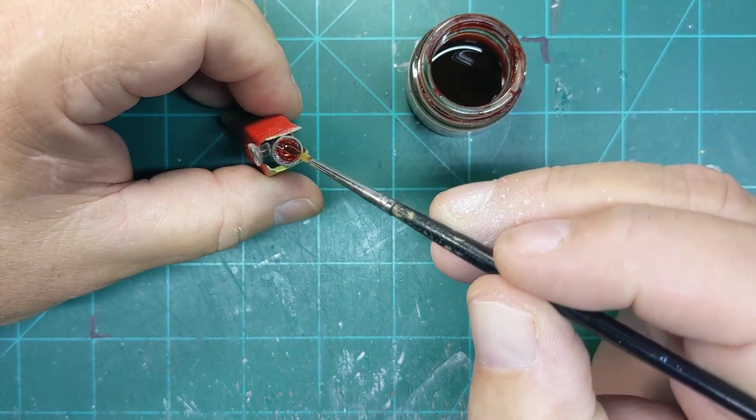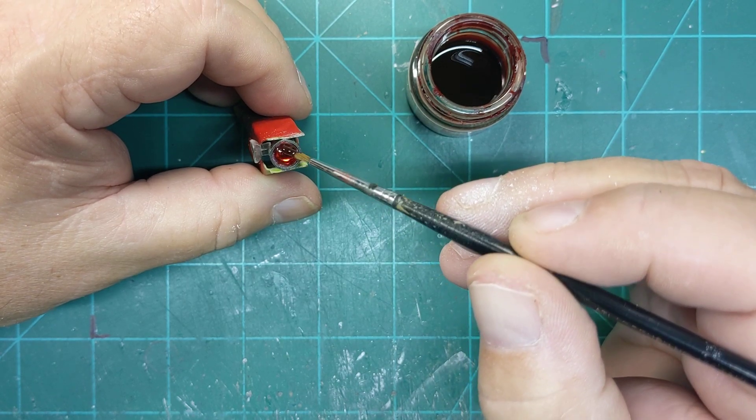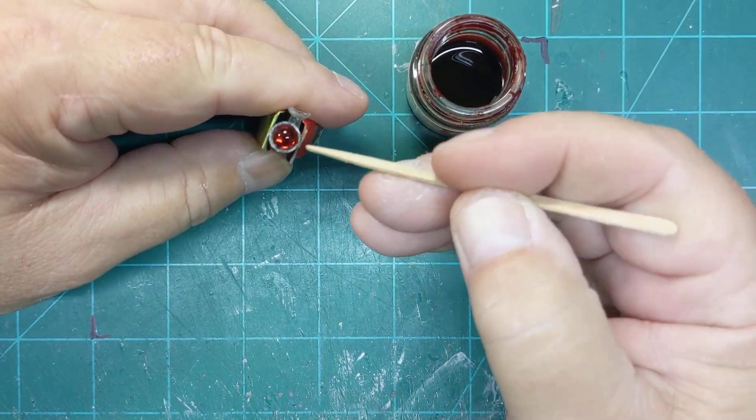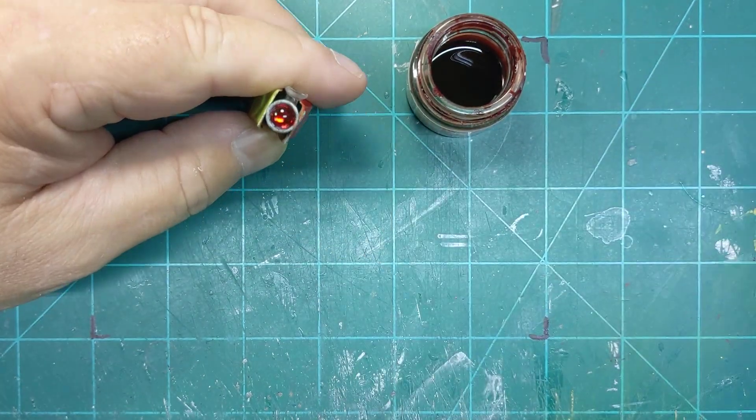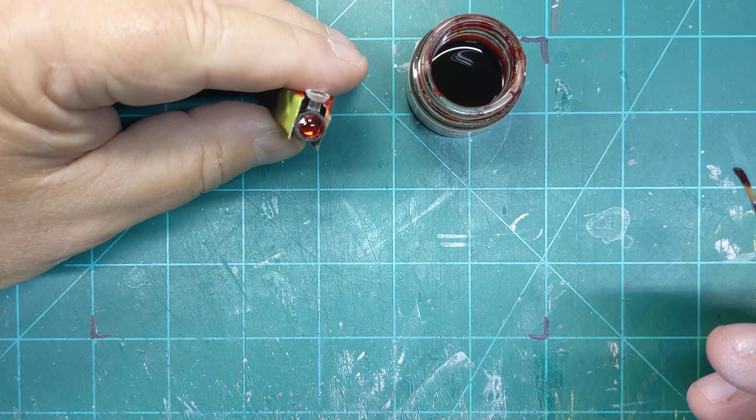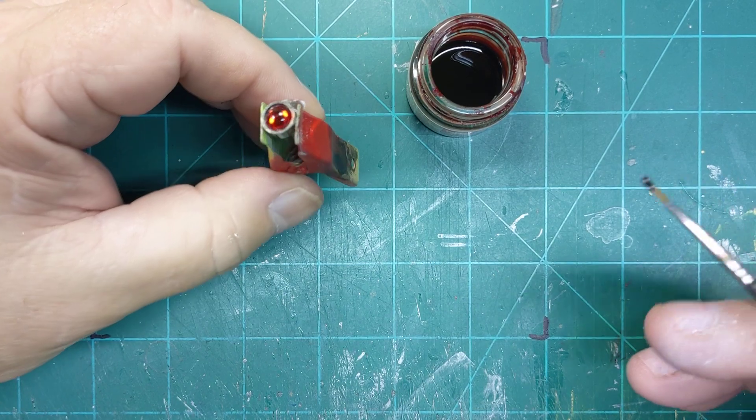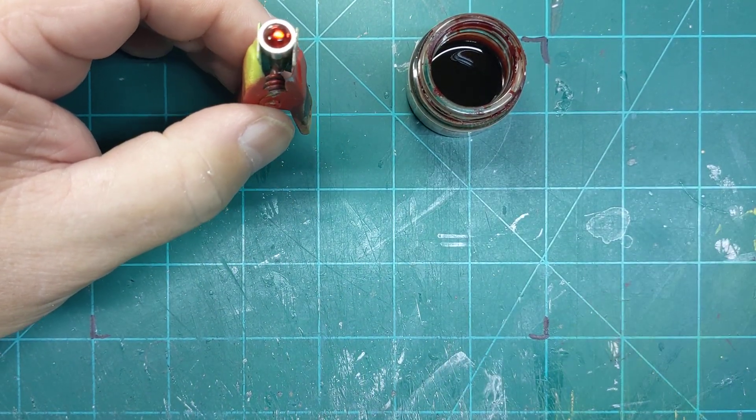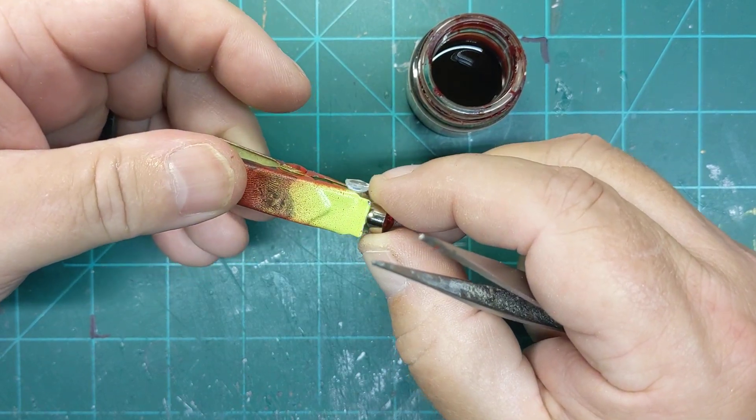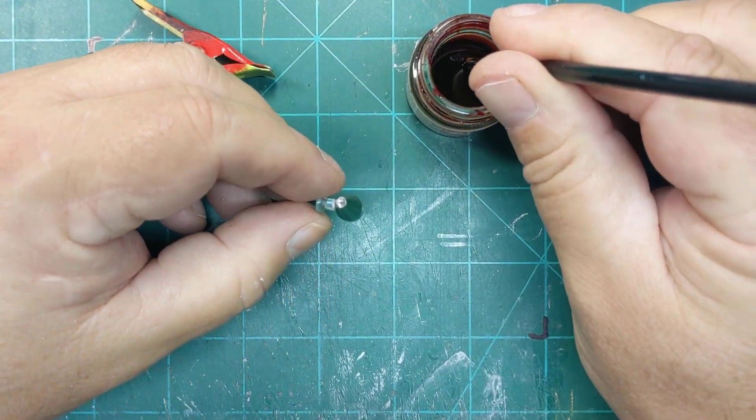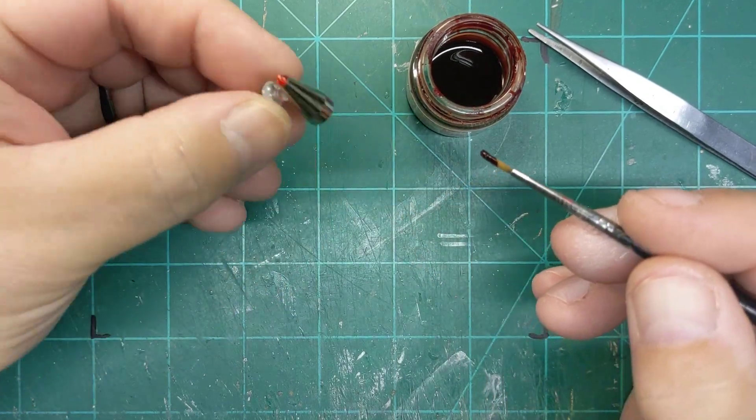The thing with these Tamiya clears is they work better if you do not actually brush them. If you just kind of plop the paint on, let it work itself around. It looks like we have a nice piece of glass in there. And then we will touch up the back side with just a drop of red, and there's the back.